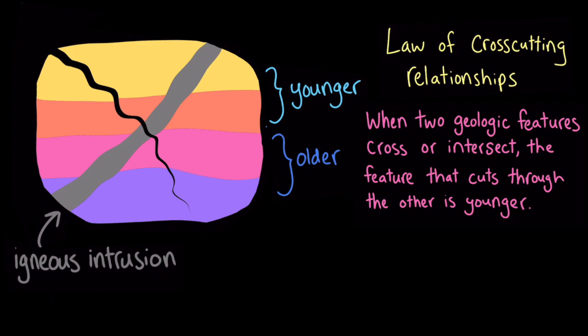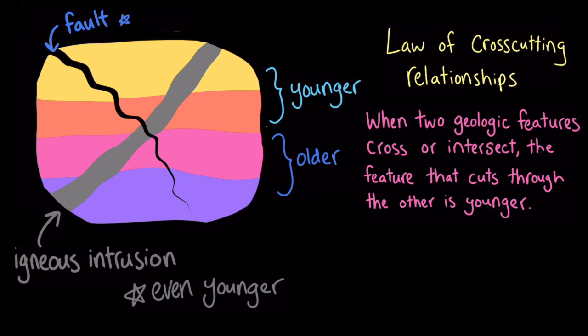So since our igneous intrusion cuts through the layers of the sedimentary rock, we know that it must be even younger than the rock layers. And what about this fault or break over here? Well, since it slices through all the layers, as well as the igneous rock, the law of cross-cutting relationships tells us that the fault must be the very youngest geologic feature here.